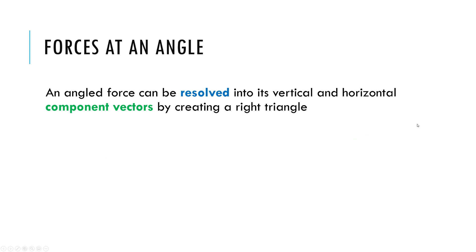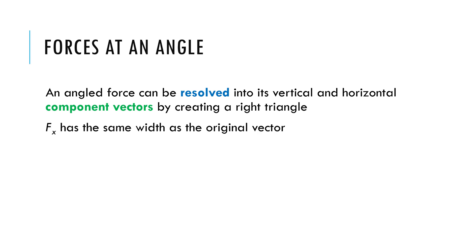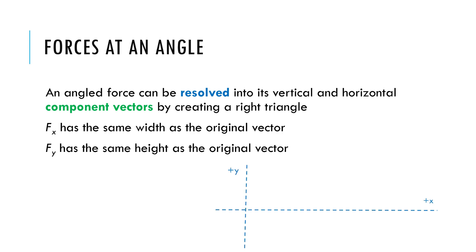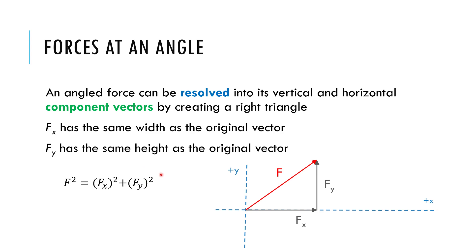What I can do is resolve an angled force into what we call component vectors — vertical and horizontal component vectors. We're going to create two equivalent vectors in x and y that add up to be the same thing as the angled force. That takes a little bit of vector math, which involves a right triangle. I'm going to call these F sub x and F sub y — the x component and the y component of force F. The x component has the same x dimension as my force, and the y component has the same y dimension, so I'm creating a right triangle. The way we look at this is that F sub x plus F sub y equals F as vectors.